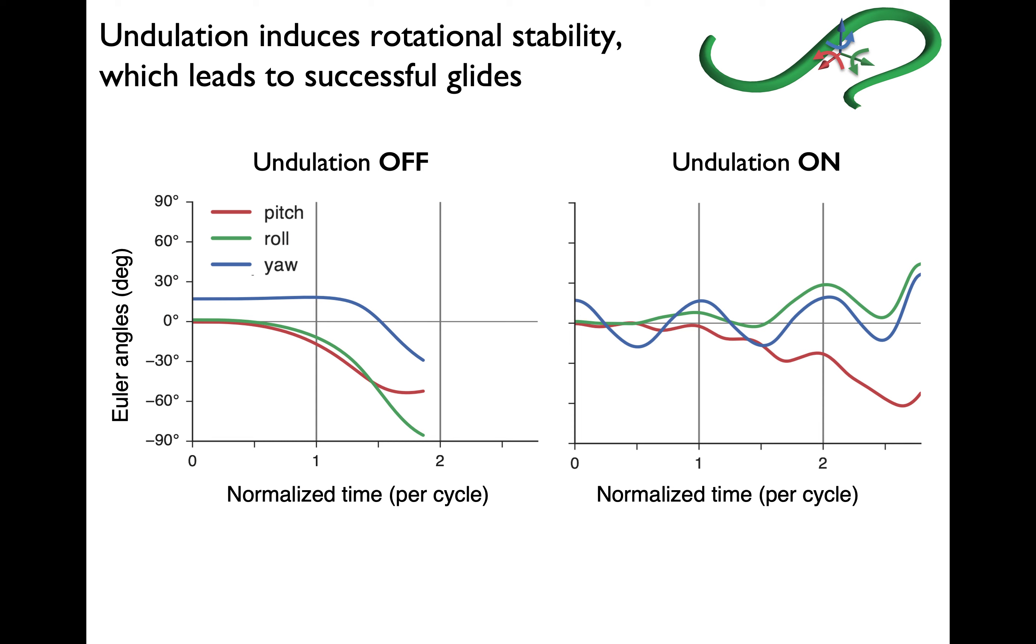This instability is clear if we look at how the yaw, pitch, and roll angles vary during the glide. When undulation is turned off, we see a secular trend of the pitch and the roll angles away from zero degrees. With undulation, we see that the snake glides longer and glides further. These angles become periodic and oscillate around zero degrees. So we can conclude that undulation is enhancing the stability.